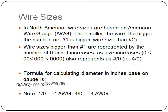For example, four-slash-zero equals four-aught. The formula for calculating the diameter in inches based on the gauge is: diameter in inches equals 0.005 times 92 to the power of (36 minus the gauge) over 39. For aught sizes, you replace the gauge with a negative number — so for a one-aught cable, AWG is replaced by negative one, and for four-aught, it is replaced by negative four, and so on.